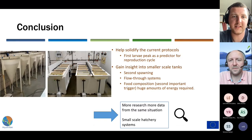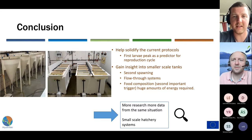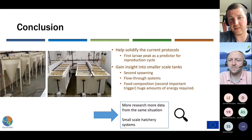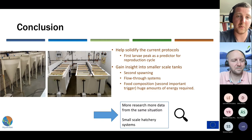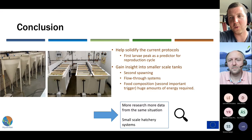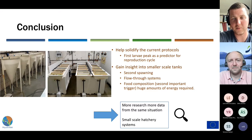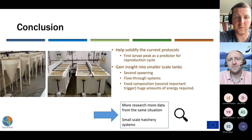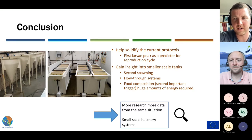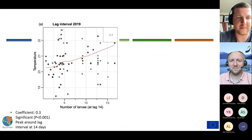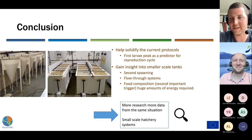My conclusions were that the first larvae peak is probably a better predictor for the reproduction cycle of oyster larvae when looking at Mann's model. We gained further insight into smaller-scale systems, and observed a second spawning, which was very interesting. What we probably should have done was use a flow-through system from the beginning to allow more food to come in and also get rid of the anoxic zones. It would also be very interesting to look further at food composition, as the food available to them in these tanks was clearly not enough. Thank you for your attention.